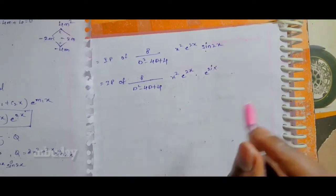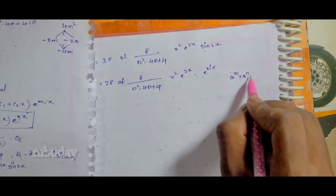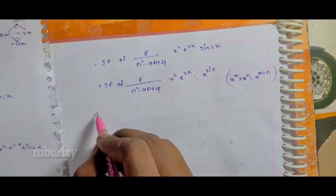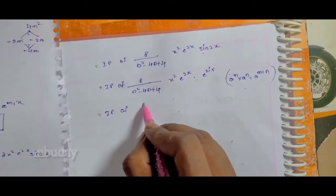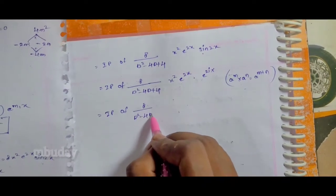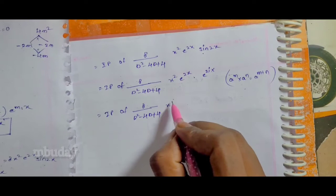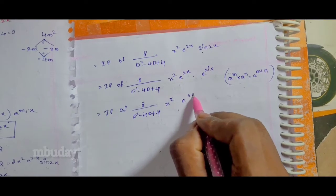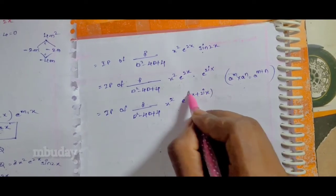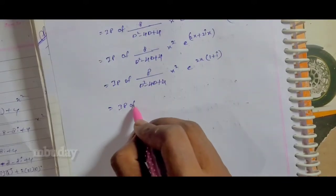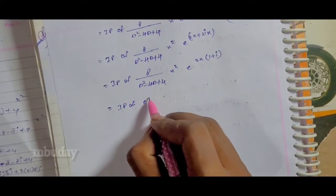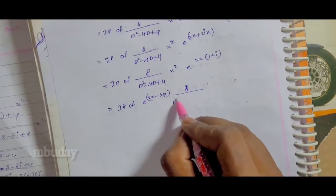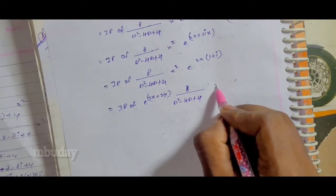Using the property e^m · e^n = e^(m+n), we combine the exponentials: e^(2x) · e^(2ix) = e^((2+2i)x). So PI = imaginary part of [8 / (D² - 4D + 4)] · x² · e^((2+2i)x).